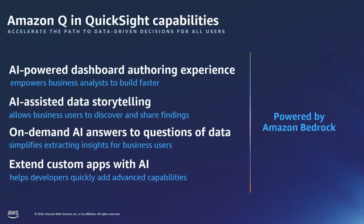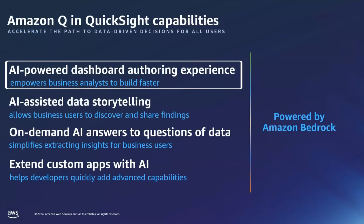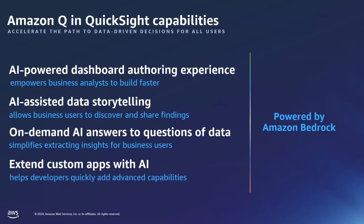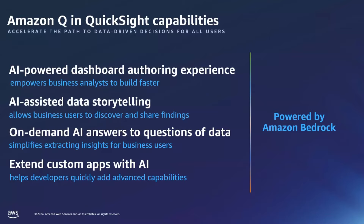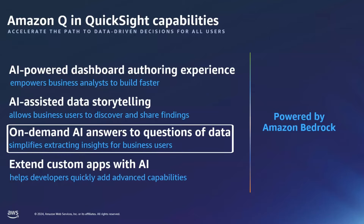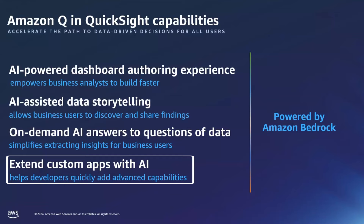Diving into the specific capabilities of Q in QuickSight — also called Generative BI — it combines QuickSight's work in Q with new large language model capabilities available through Amazon Bedrock. The first set of capabilities enables analysts to build dashboards and reports faster. The next focuses on storytelling — allowing business users to share findings in presentation-ready formats. The third enables users to quickly ask and answer questions against their data using Q search. Many of these capabilities can also be embedded into custom-facing products and internal applications.